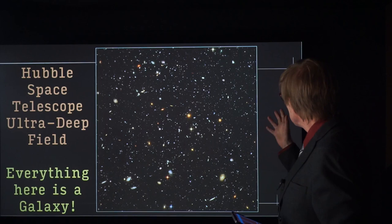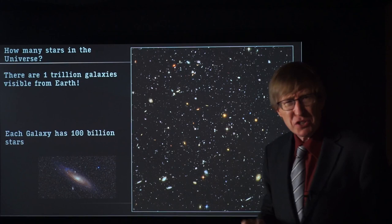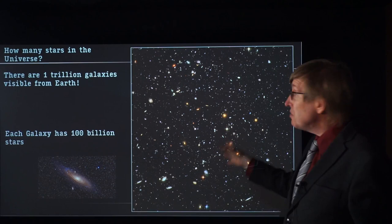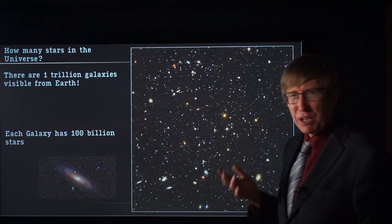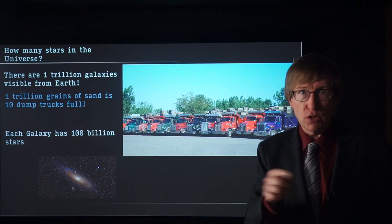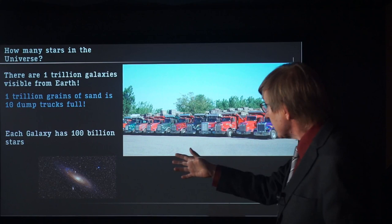We want to somehow picture how many stars there are in the universe. If you take all the galaxies and count them, multiplying by all the spots like this you can fit in the whole sky, you can see a trillion galaxies visible from Earth. A trillion. How do we picture a trillion galaxies? A trillion galaxies is 10 dump trucks full of sand — a trillion grains of sand is 10 dump trucks full of sand.